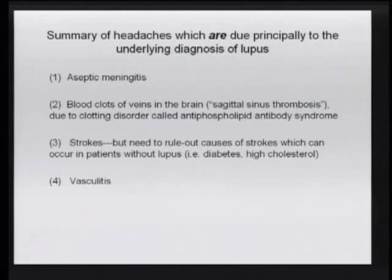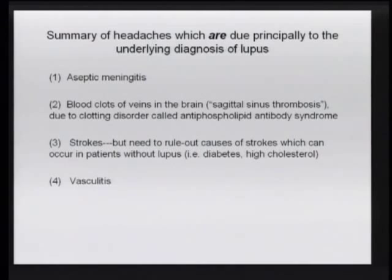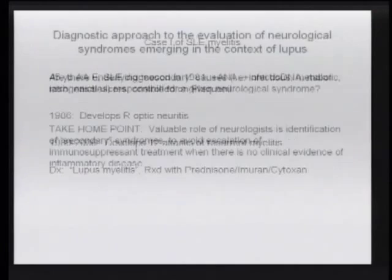Once you rule out infections and cancers you can consider causes of headaches actually due to lupus. Lupus patients can develop aseptic meningitis — meningitis not due to infection. They can get blood clots in the veins of the brain called sagittal sinus thrombosis, due to a clotting disorder called antiphospholipid antibody syndrome. Lupus patients can get strokes as a result of their lupus, but you always have to rule out general population causes such as diabetes and high cholesterol. Lastly, they can develop vasculitis, inflammation of blood vessels.